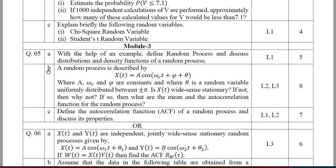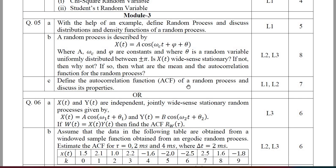In Module 3, I will stress on question number 5B — this problem is a bit important, concentrate on this type. With the help of an example, you are required to define a random process and discuss its distribution and density functions. Also define the autocorrelation function (ACF) of a random process and discuss all its properties.